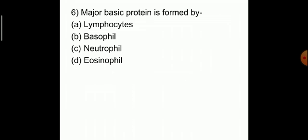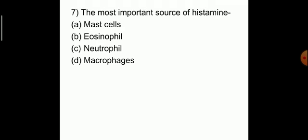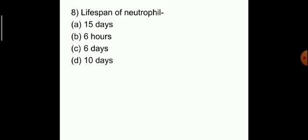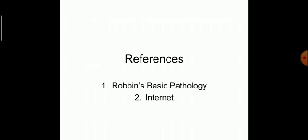Major basic protein is formed by — the answer is eosinophil. The most important source of histamine — the answer is A, mast cells. The lifespan of a neutrophil — the answer is B, six hours.